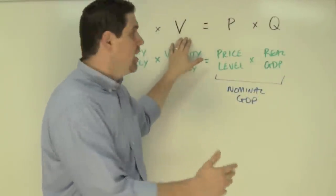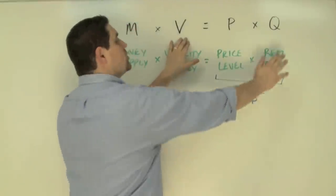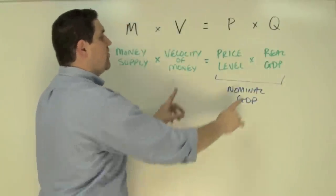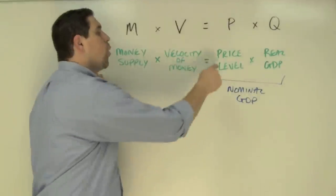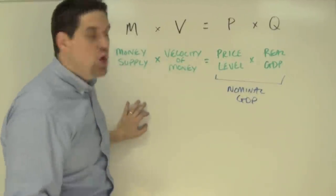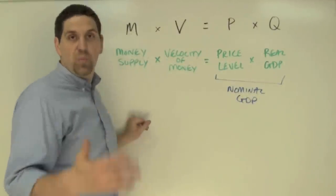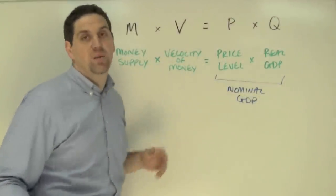Our output, our capital, our machinery tells us how much stuff we can produce. And so this one's constant. This equation says that if these two are constant and you increase the money supply, you're going to have a proportional increase in price level. So if you increase the money supply 50%, you're going to have 50% increase in prices.